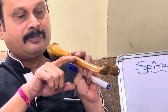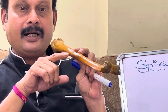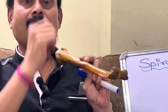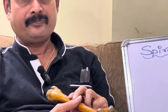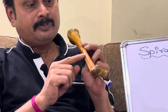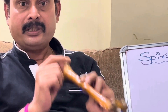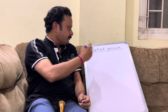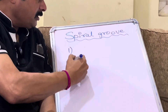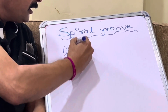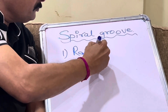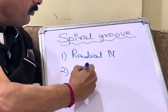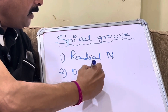Since it is running spirally and it contains the radial nerve, it is also called the radial groove. The contents of this spiral groove are not only the radial nerve — it contains two important structures: the radial nerve and the profunda brachii artery.